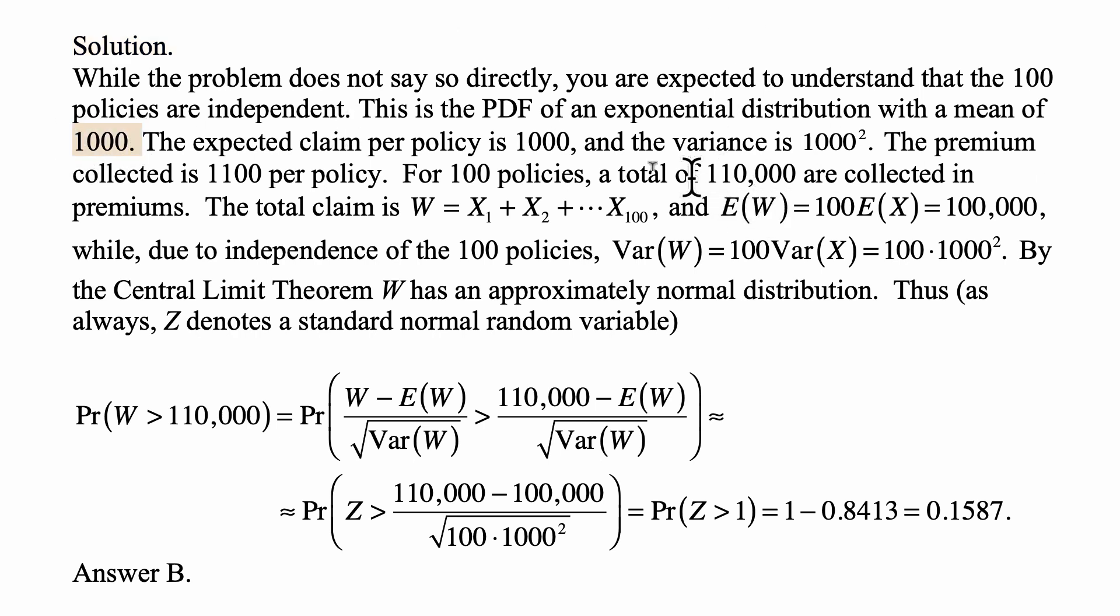So the expected claim per policy is 1,000, and the variance is 1,000 squared. The variance of exponential distribution is the square of its mean.